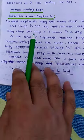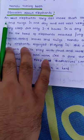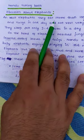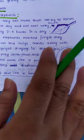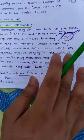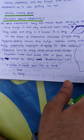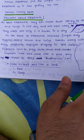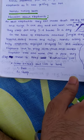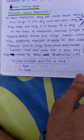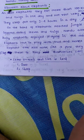In this session we are discussing some facts about elephants' life. Elephants eat more than 100 kg of leaves and twigs in one day. They do not rest very much — they sleep only for two to four hours a day. Now, what is the herd of elephants?